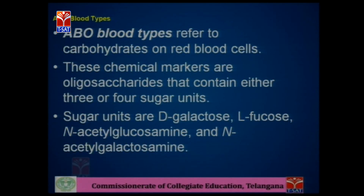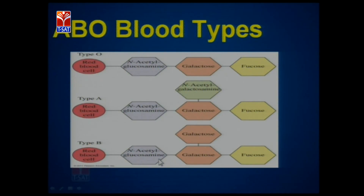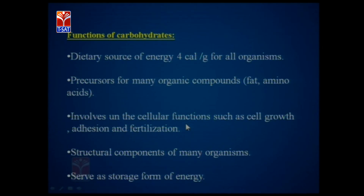Heparin — as all of you know — is a blood anticoagulant; it is medically important because it prevents clotting in the bloodstream and is the strongest organic acid found in the body. Its repeating units include glucosamine, and heparin also contains sulphate groups that are negatively charged, which is why it is considered a glycosaminoglycan. In blood groups, carbohydrates are also present — the differences between blood groups A, B, and O involve sugar units: D-galactose, L-fucose, and N-acetylglucosamine. The chain is the same in all groups, but specific sugars differ between group O, A, and B.